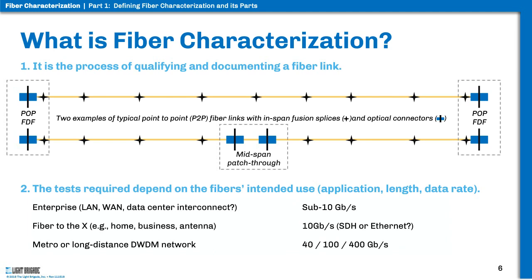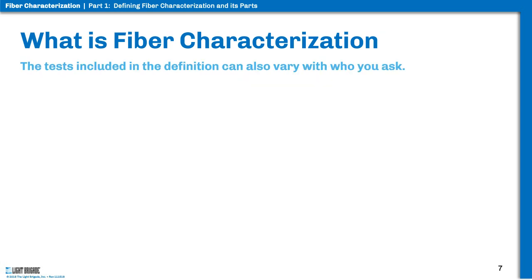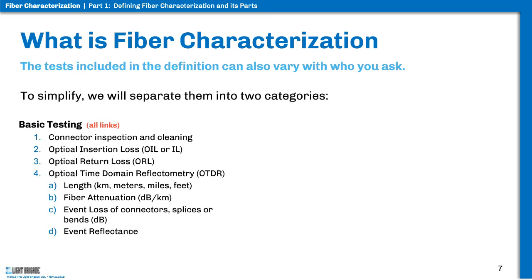To simplify, we're separating this into two categories. The first part is basic testing, which consists of connector inspection and cleaning, insertion loss testing, optical return loss — which is different than reflectance — and the role of the OTDR, which we've used historically to measure length of the fiber, attenuation of a fiber span, and event losses for both attenuation and reflectance.